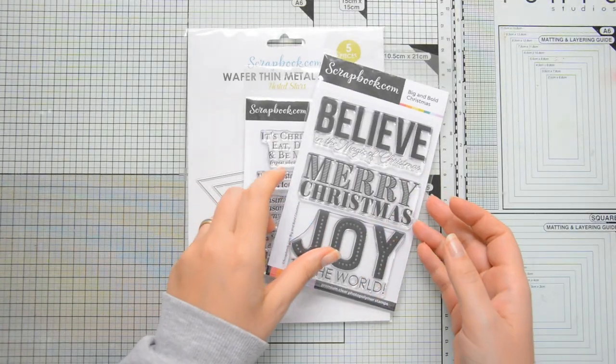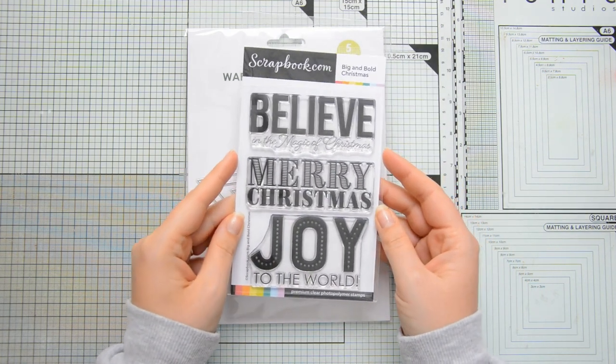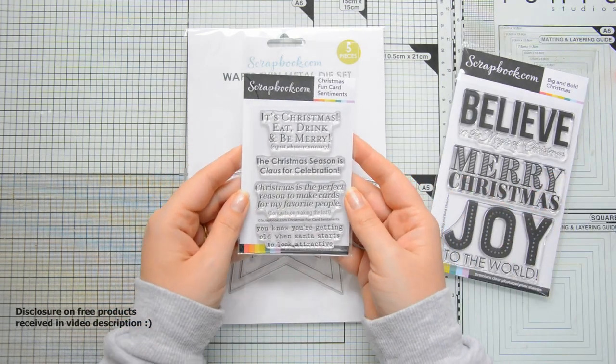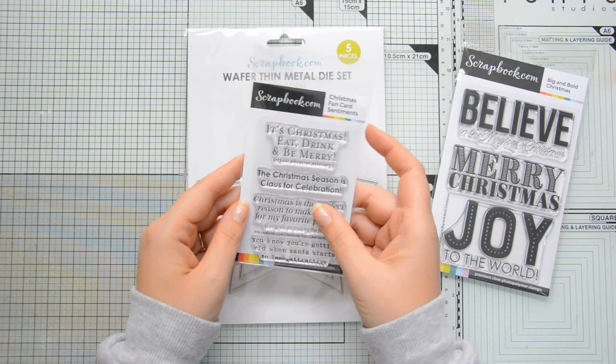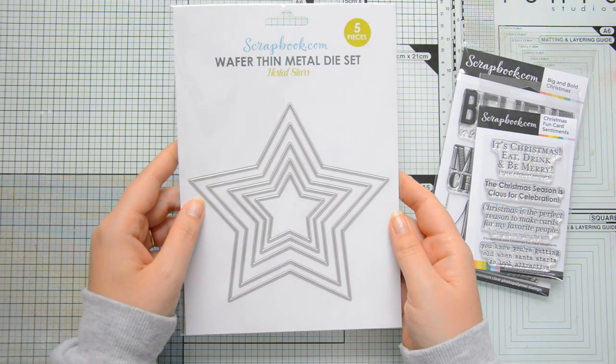I made two cards for the hop as you have seen in the pictures and the main products that I used are the Big and Bold Christmas Stamps by scrapbook.com, the Christmas Fun Card Sentiments also by scrapbook.com, and lastly these Nested Stars dies.